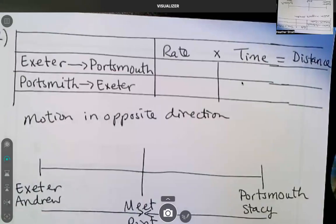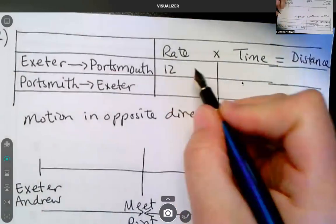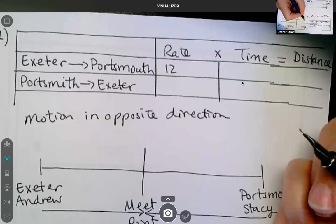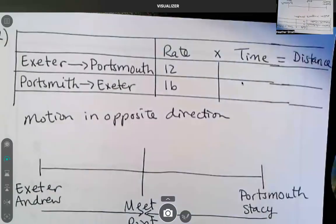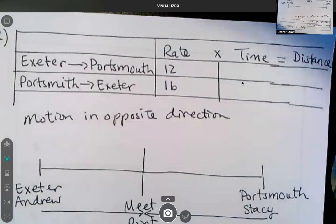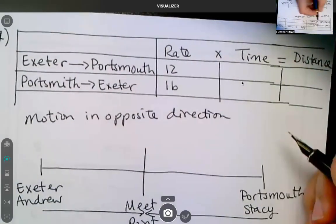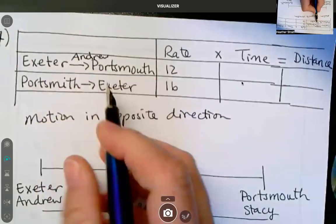Okay. 9:30 Andrew left Exeter and his rate is 12 miles per hour. Stacey left Portsmouth. She's going faster. Maybe she has a tailwind pushing her. Because if you ride your bike into the wind, it's hard. Okay. And I guess I do need their names, don't I? Andrew, Stacey. Okay.